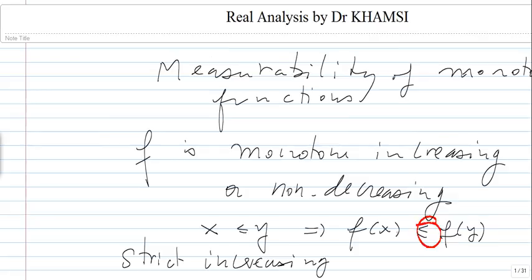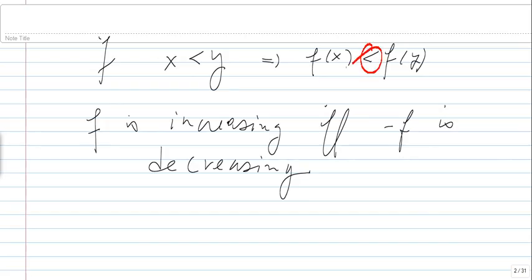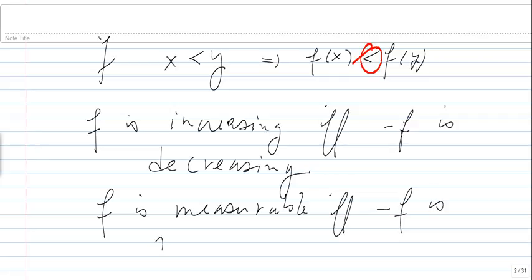Note that f is increasing if and only if −f is decreasing. Therefore, if you want to show that f is measurable, it suffices to prove the result for increasing functions and we will obtain it for decreasing functions as well. We just focus on one and then get the other — this is typical in many properties and theorems in mathematics.